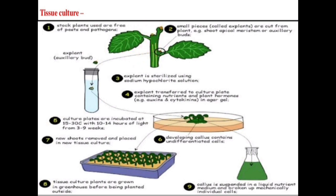A small tissue of a plant is transferred into a nutrient medium. The nutrient medium contains hormones such as auxins and cytokinins, along with agar gel. This nutrient medium supports the growth and development of the plant tissue in tissue culture.